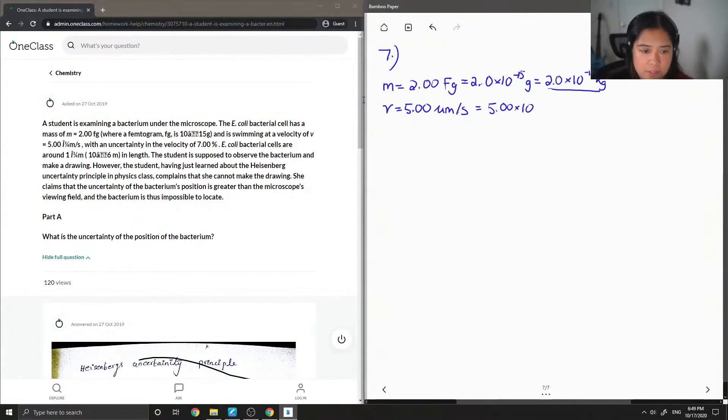Yeah, every time there's a weird symbol there, I assume it's micro. And then we're looking for delta x in meters. Okay, so after we write down everything that's given.